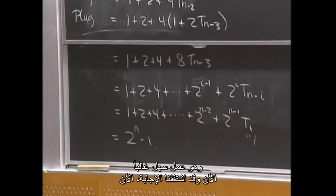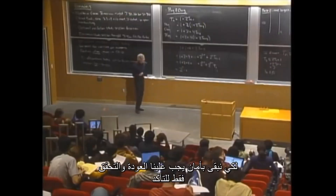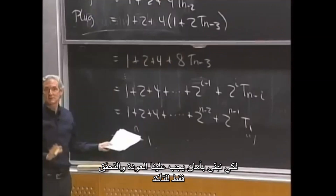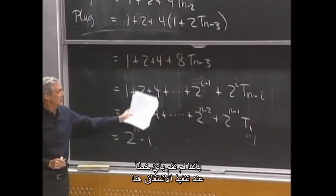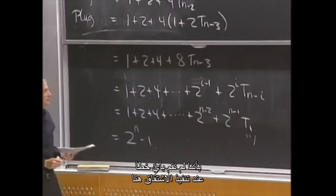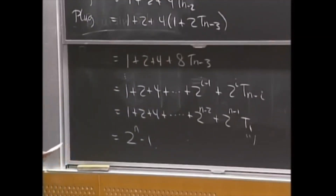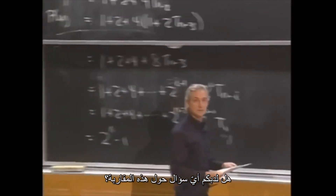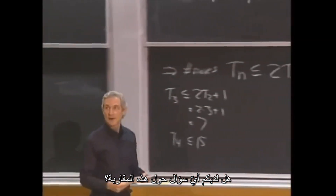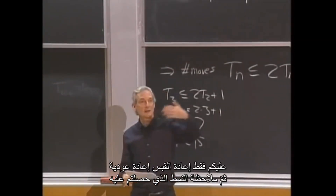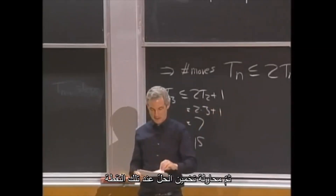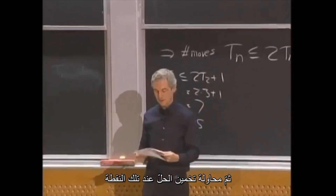We've derived the answer with only a small pattern-observation step. To be really safe, go back and verify by induction to make sure we didn't make a mistake in the derivation. Any questions about that approach? You just keep plugging back into the recurrence, look at the pattern you get, and try to guess from that point and then solve.